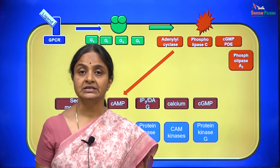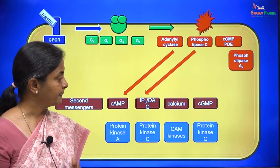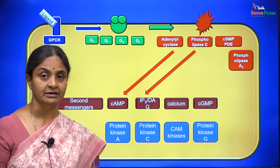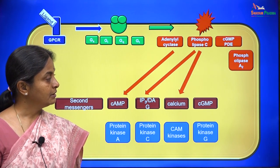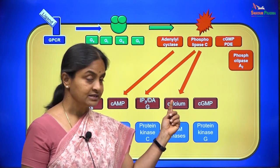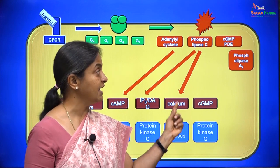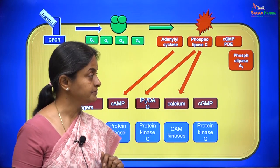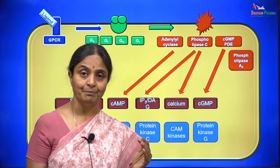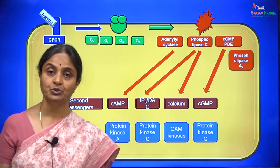Adenylyl cyclase converts ATP to cyclic AMP, increasing the concentration of cyclic AMP within the cell. Phospholipase C increases the levels of inositol triphosphate in the cytoplasm and diacylglycerol in the membrane. Calcium is listed as a separate second messenger because there are other ways of increasing cytosolic calcium beyond phospholipase C activation. cGMP phosphodiesterase converts cGMP to 5-GMP, the inactive form, thereby reducing cGMP levels within the cell.